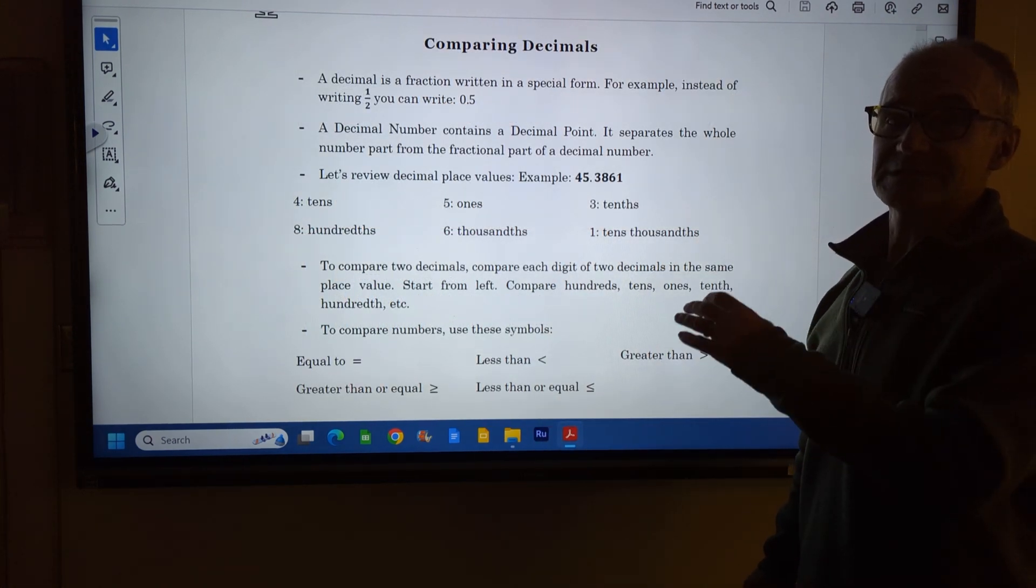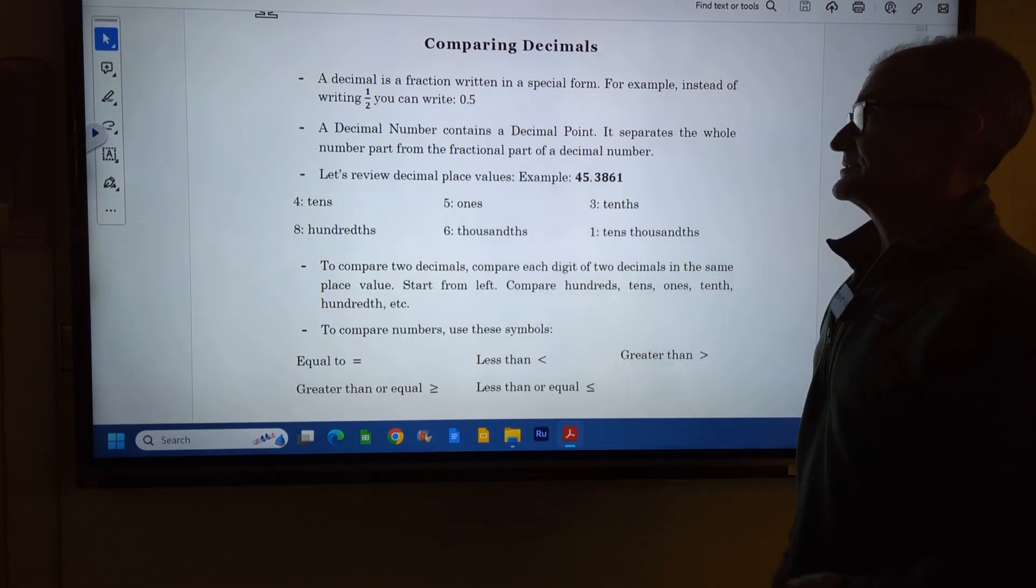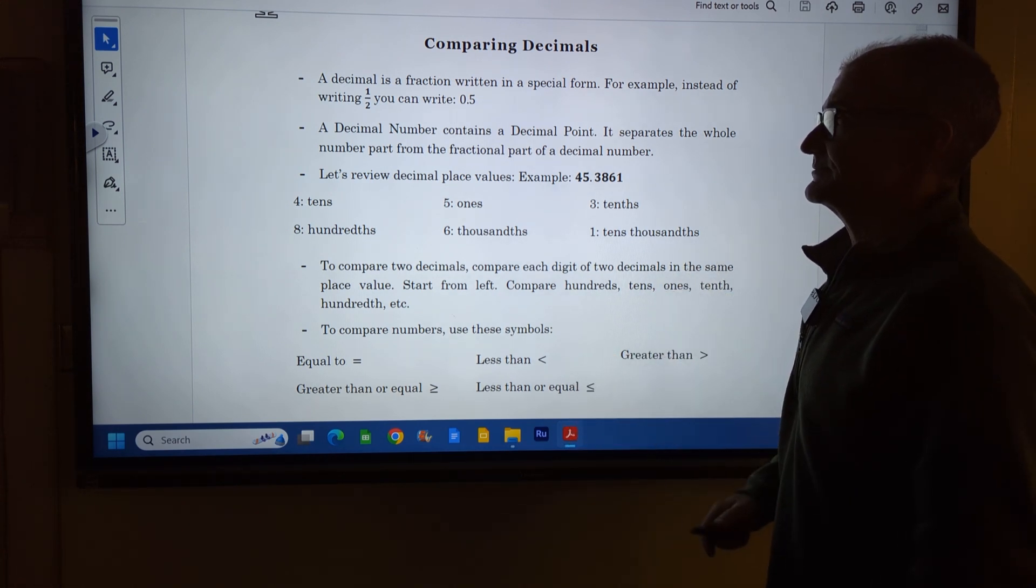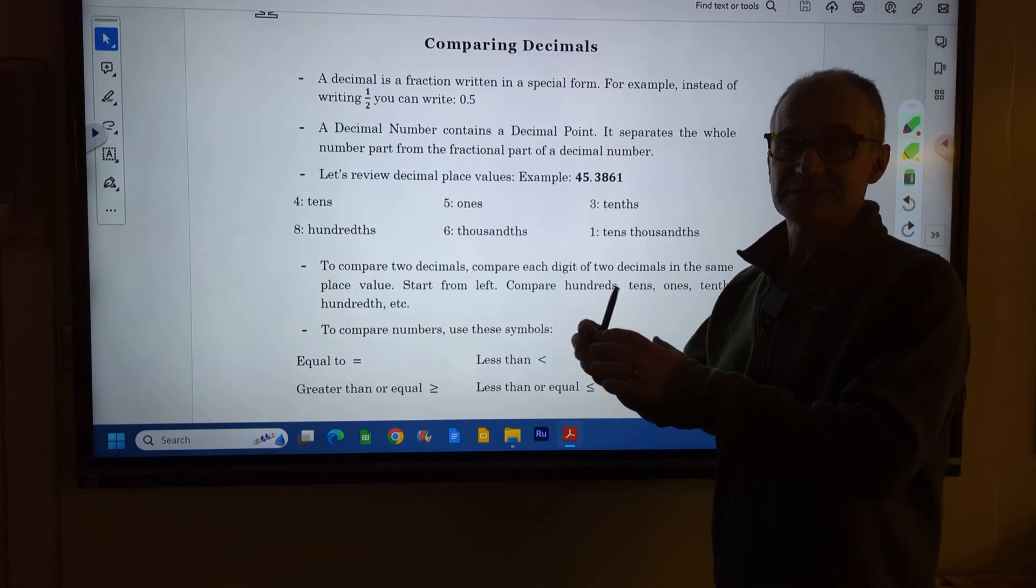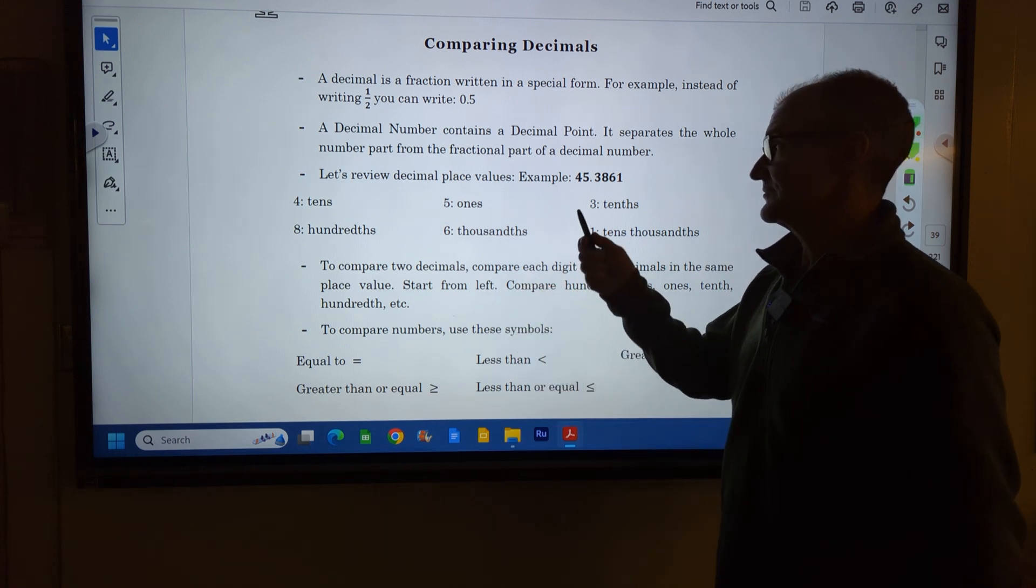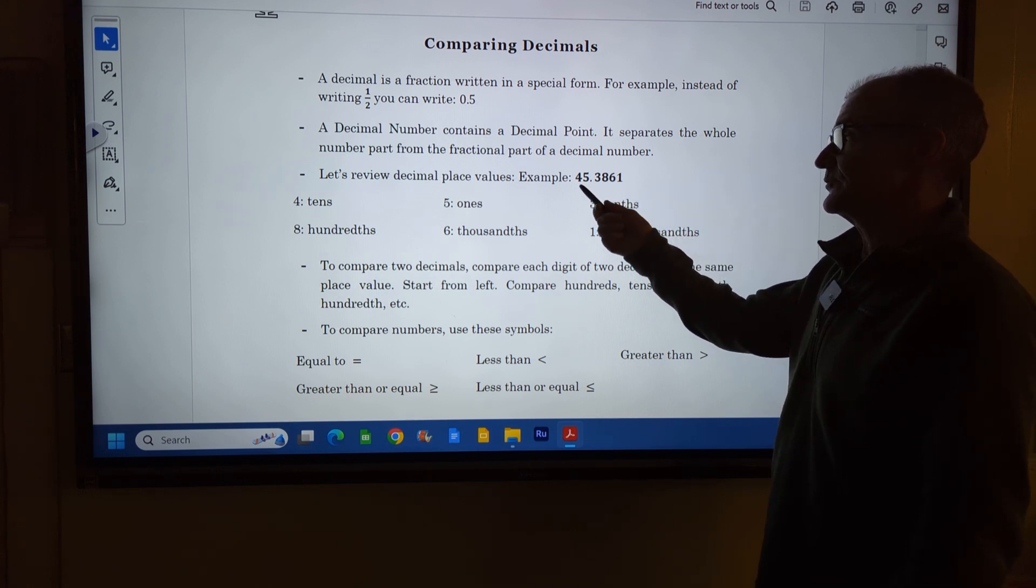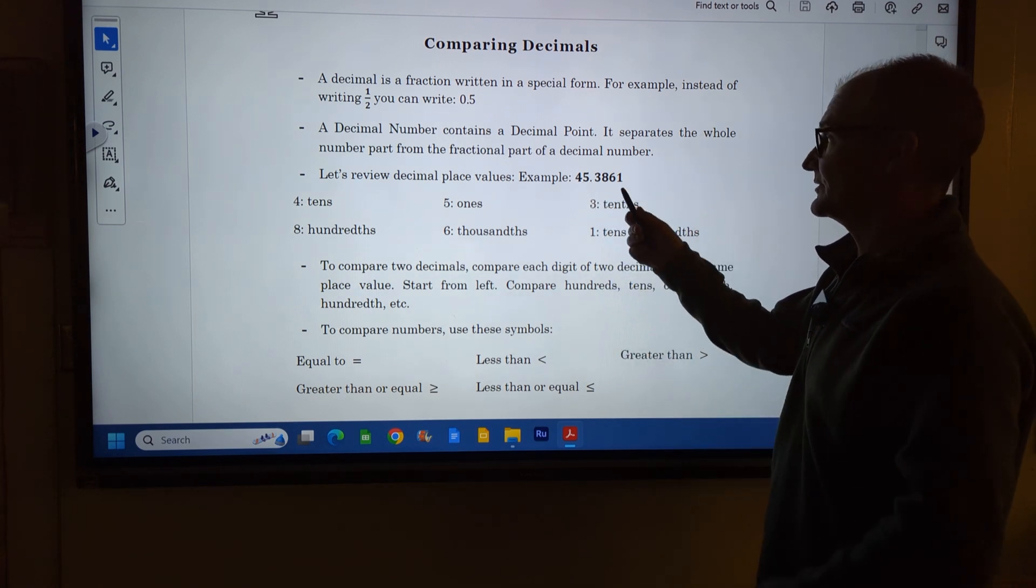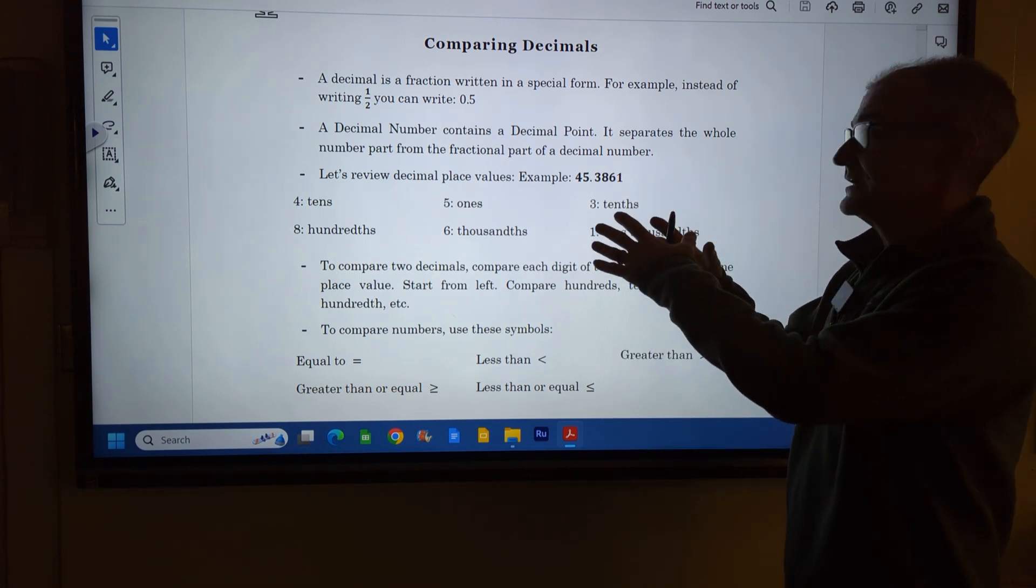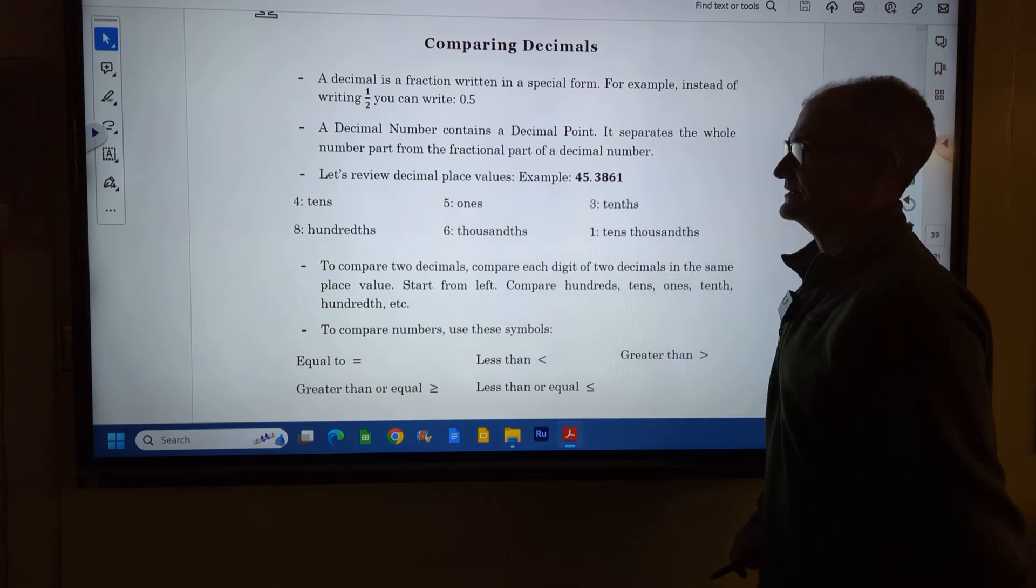The first section we're going to do on decimals is comparing decimals. Which one's bigger than the other one? To start with, a decimal is just a fractional part of a number, so that's why you need to know your fractions first. If you're looking at 45.3861, the 45 is the whole number. The .3861 is the fractional part. It's not a full number, it's a partial part of a number.